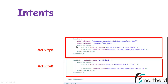Now you must be thinking what this intent filter stands for. Inside the intent filter we have two tags: action and category. This action and category here shows action.MAIN and category.LAUNCHER. These two statements specify that activity A is the entry point of our application — that is, when you open the application, the first activity visible to you is activity A.